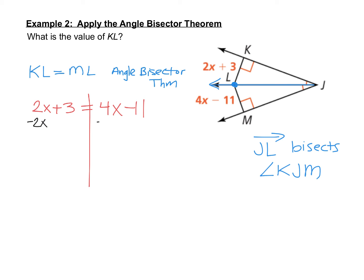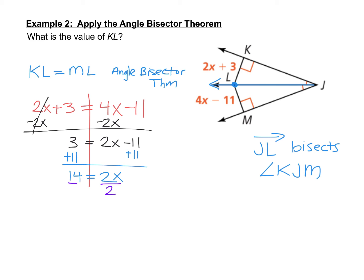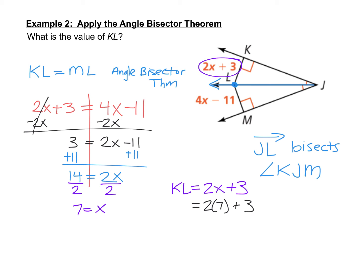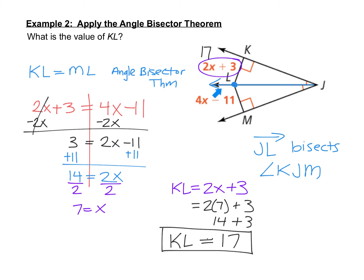Subtracting 2x from each side gives 3 equals 2x minus 11. Adding 11 to both sides gives 14 equals 2x, and dividing by 2 gives x equals 7. We're looking for KL, which is 2x plus 3. Substituting x equals 7: 2 times 7 plus 3 equals 14 plus 3 equals 17. So KL equals 17. Plugging x into ML as well: 4 times 7 minus 11 equals 28 minus 11 equals 17, confirming both equal 17.